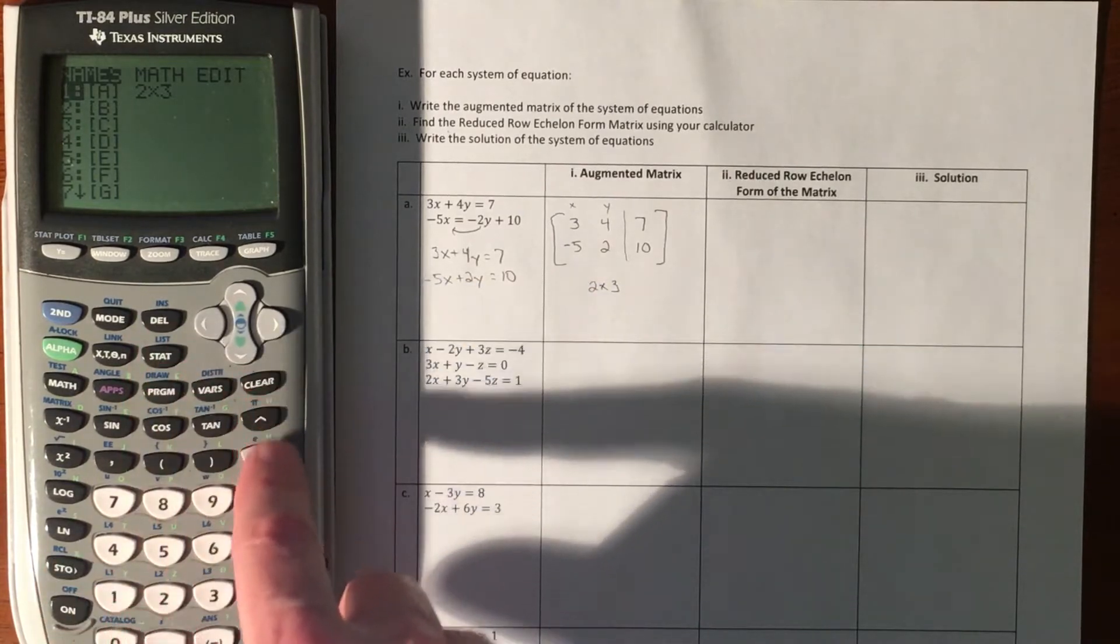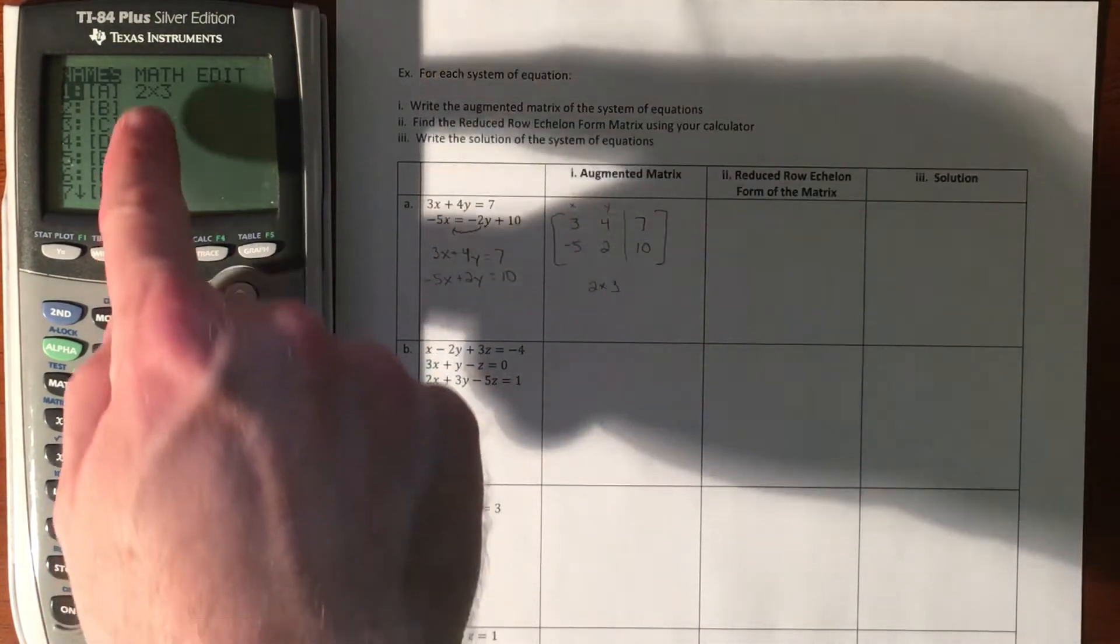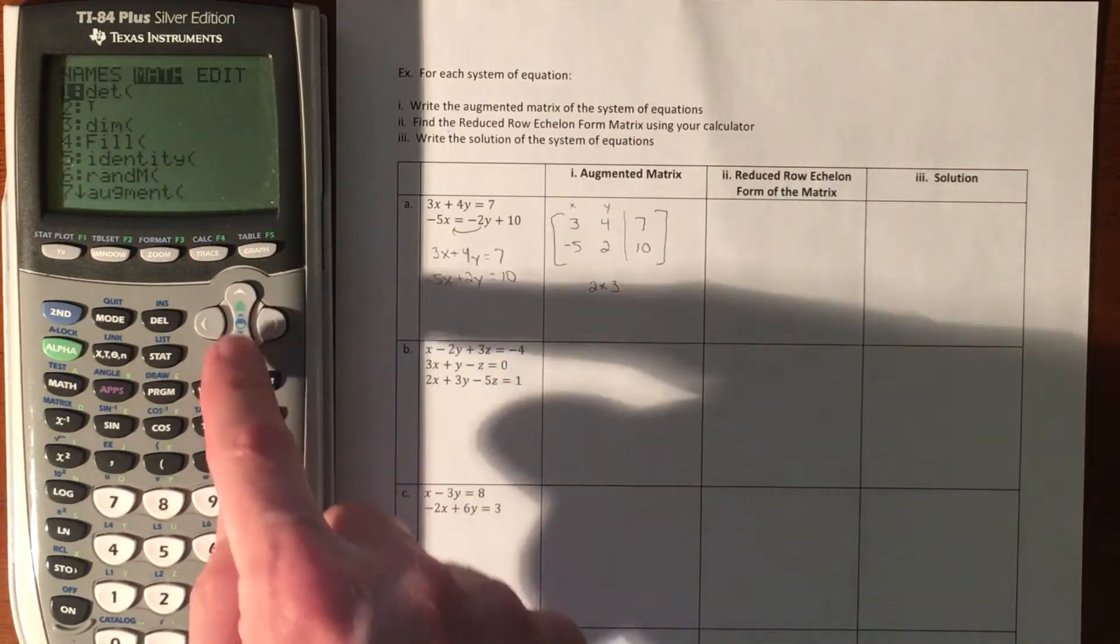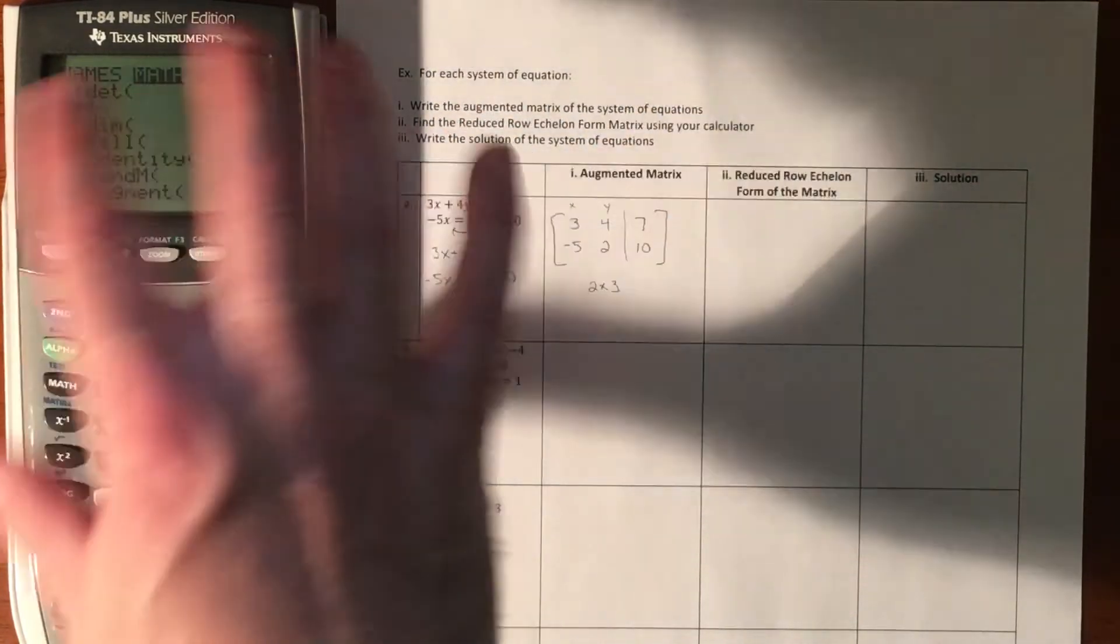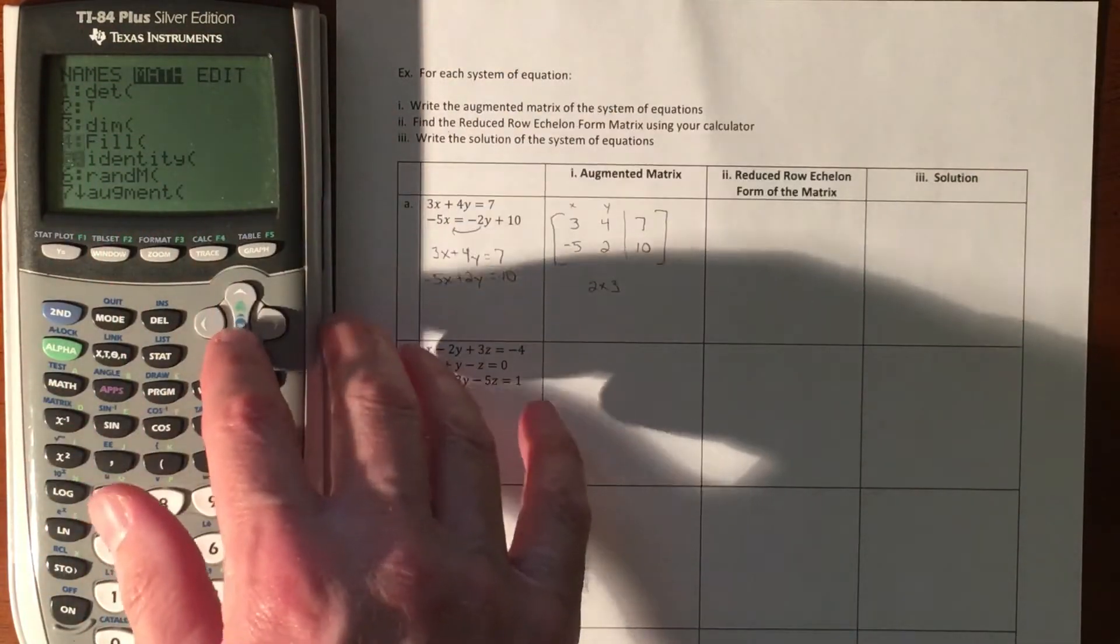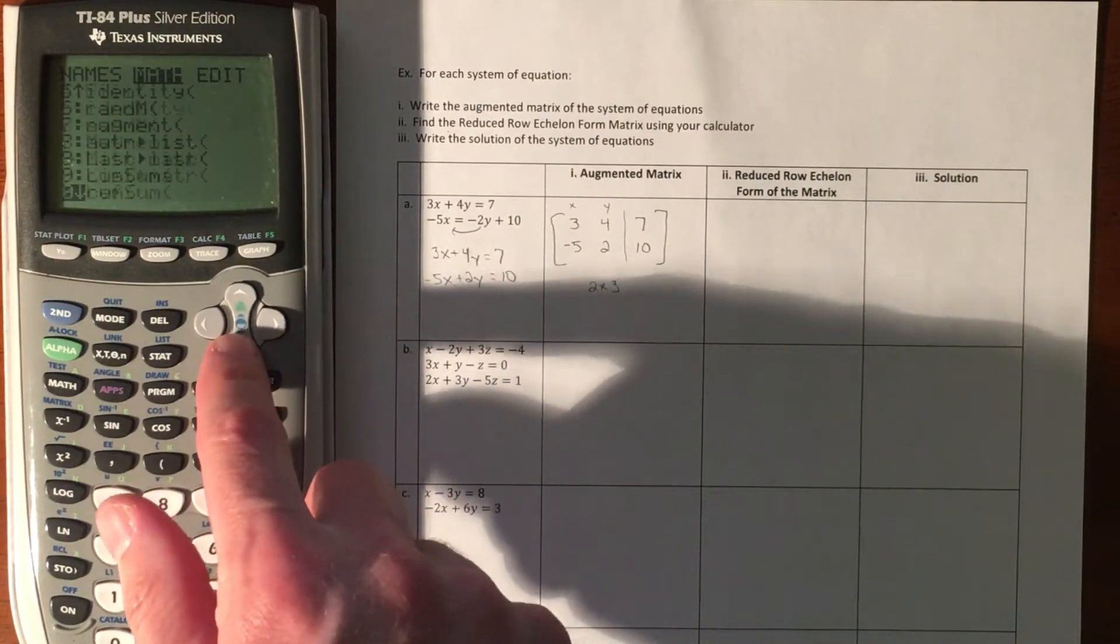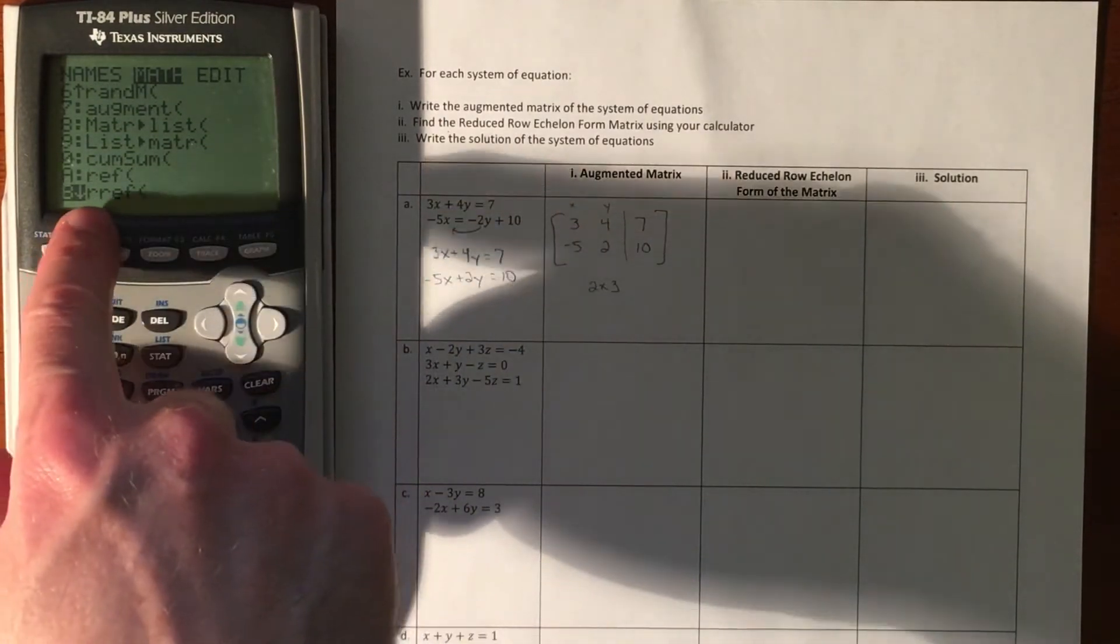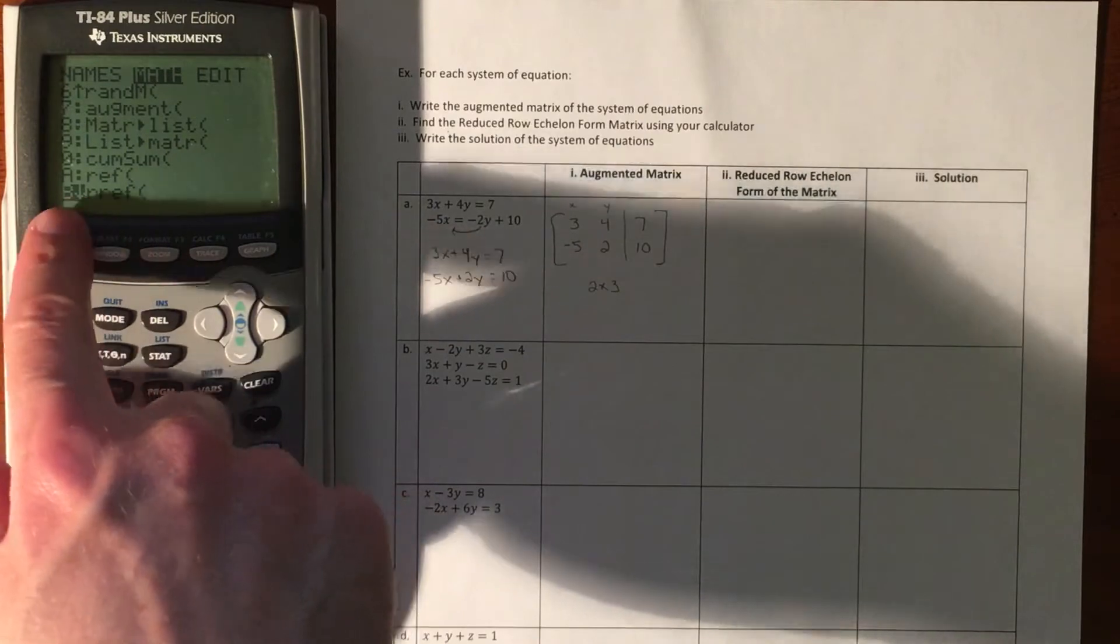Before we take that matrix, we're going to do math and scroll down. There's a whole class on matrices with all sorts of different things you can do, but we are looking for row reduced echelon form, so B.